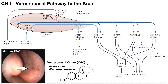Following the axons of the mitral cells from the accessory olfactory bulb, they lead to the amygdala, which is part of the limbic system. From the amygdala, that information travels to the hypothalamus. The hypothalamus has many functions — sleep regulation, hunger and thirst, stress response, autonomic regulation — but arguably the most important function here, as it relates to pheromones and the vomeronasal organ, is the regulation of mating or sexual behavior.